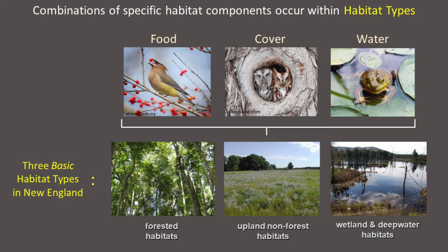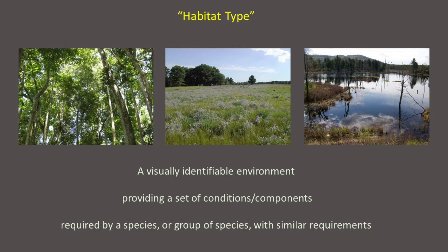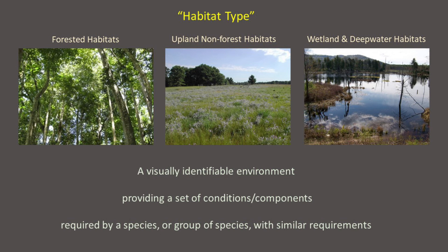Each wildlife species occurs within the specific habitat types that provide the specific types of food, cover, and water that it needs to survive and reproduce. Think of habitat types as visually identifiable environments that provide a specific set of conditions or habitat components required by a wildlife species or by a group of wildlife species that have similar requirements. There are many specific types of forest, upland non-forest, and wetland and deepwater habitats in New England. With practice, you can learn how to identify these specific habitats in the field and by using remote techniques such as aerial photography. Each habitat type is characterized by specific habitat components that support a predictable group or community of wildlife species that can be expected wherever those habitats and their components occur on the landscape.